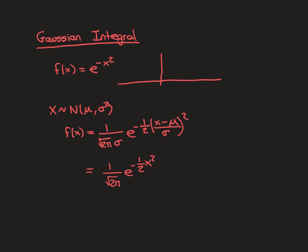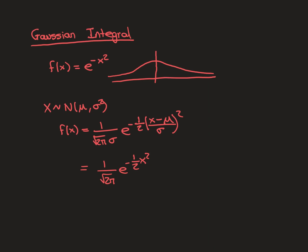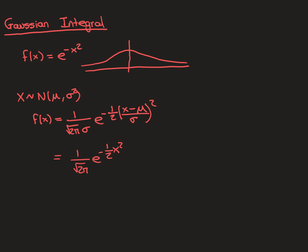If you know anything about the normal distribution, you'll be able to draw roughly what the Gaussian function looks like — it's a bell-shaped curve. The goal for this video is to evaluate the Gaussian integral: the integral from negative infinity to infinity of e to the negative x squared dx.